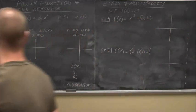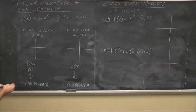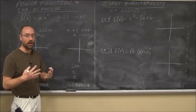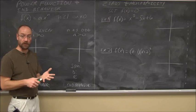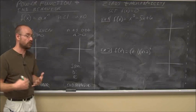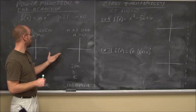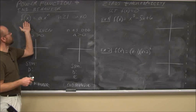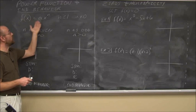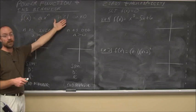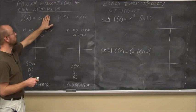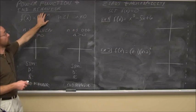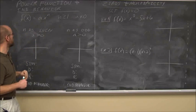One thing about polynomials is power functions and end behavior. Recalling our library functions — like the quadratic or cubic — these are called power functions. Essentially, if f(x) = ax to the n, where n is an integer greater than or equal to 1 and a is not equal to 0, we call this a power function.